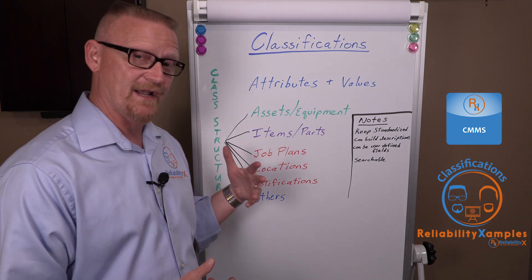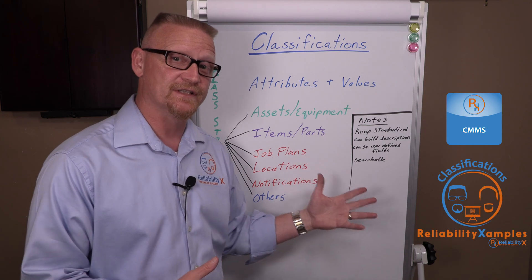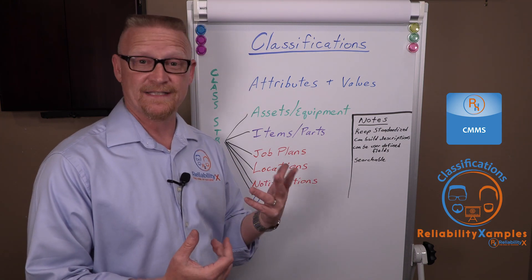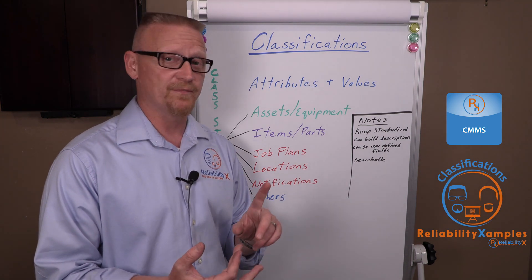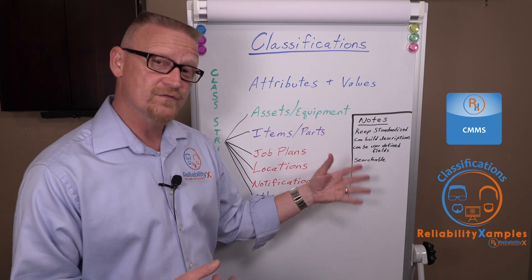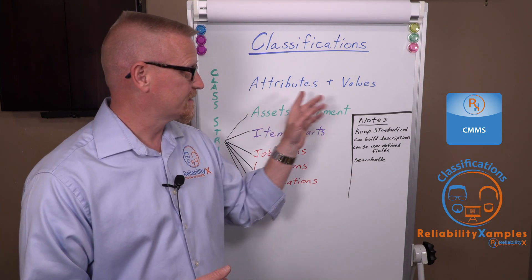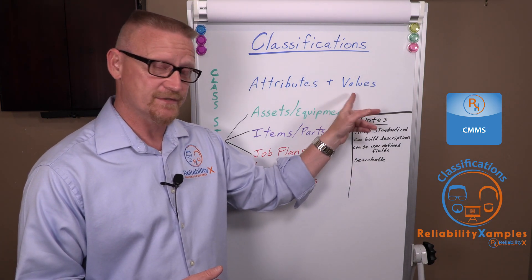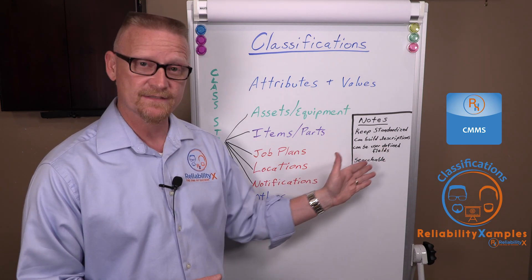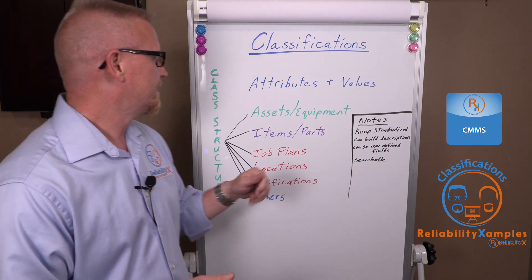On the records of job plans, you may have different lists of attributes: is this a repair job plan or a PM job plan? All those things could be attributes and then you would list the values — this is a PM job plan or this is a corrective order job plan.